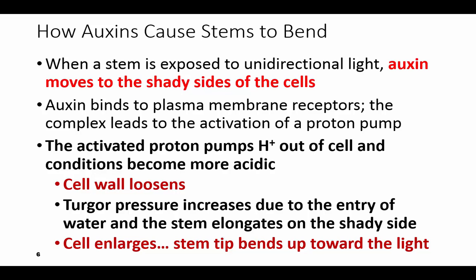Auxins cause the stem to bend towards the sun. When the stem has unidirectional light, the auxin moves to the shady side of the cells and it binds to the plasma membrane receptors and activates a proton pump. That proton pump pumps hydrogen ions out of the cell so the cell becomes more acidic, which loosens the cell wall. Turgor pressure increases because water enters, so the stem elongates on the shady side, the cell enlarges, and the stem bends towards the light.